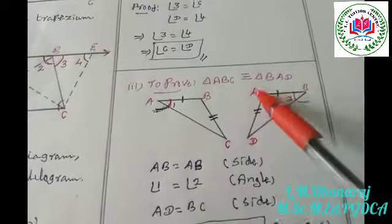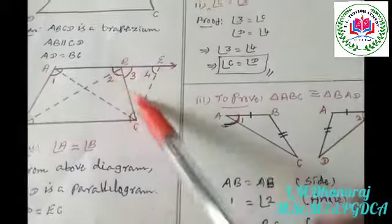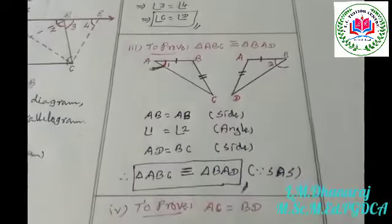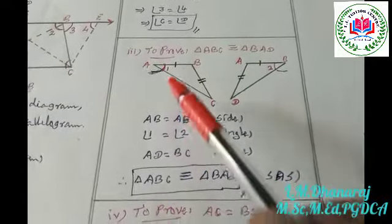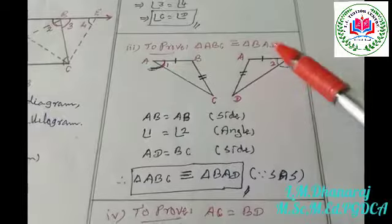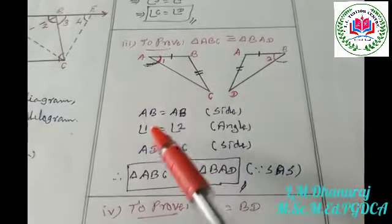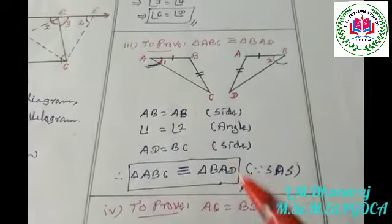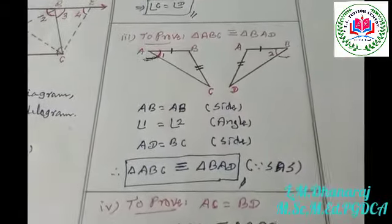For the third subdivision, we have to prove triangle ABC is congruent to triangle BAD. Side AD is equal to side BC, angle A is equal to angle B, and AB is common. By the Side-Angle-Side criterion, triangle ABC is congruent to triangle BAD.